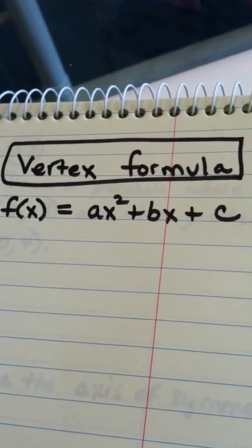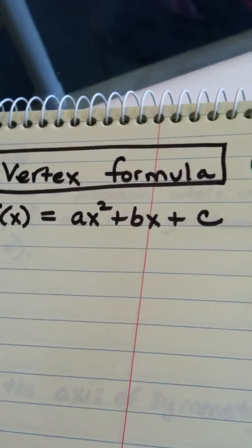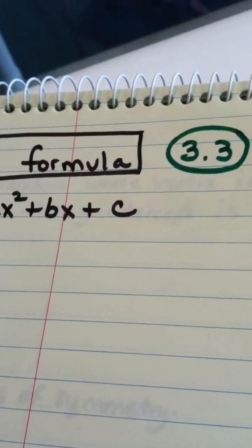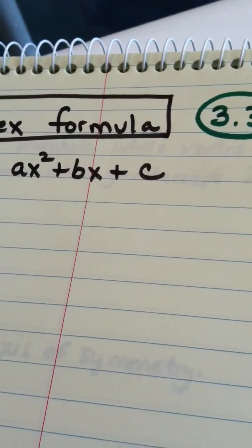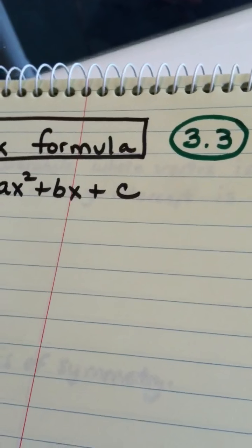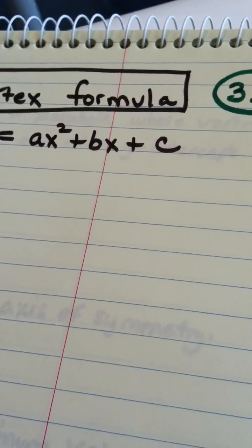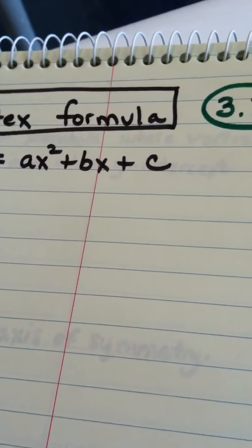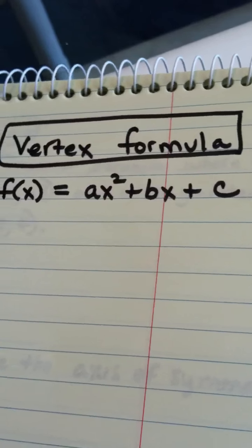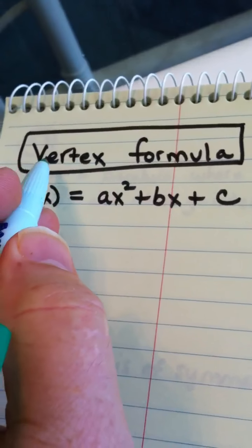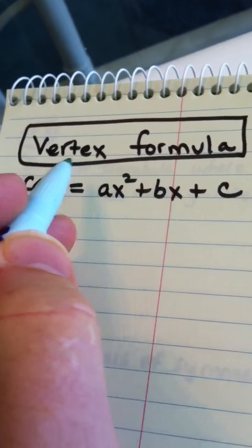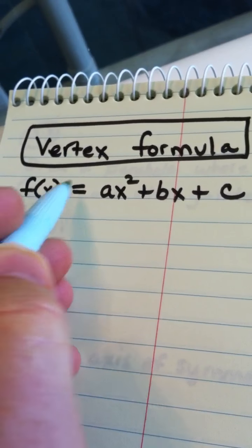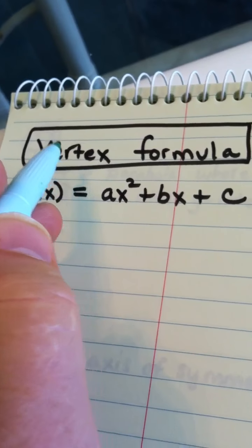To this point in the course, if you've been asked to find the vertex of a parabola, I've taught you how to do it by graphing the parabola and then using either your trace key or the max min key on your calculator. Here, you're being asked to find the vertex of a parabola by hand, and in order to do that, you need to know the vertex formula.